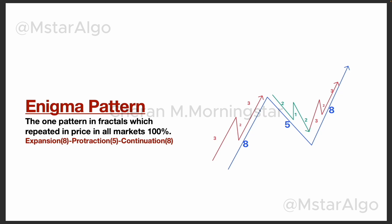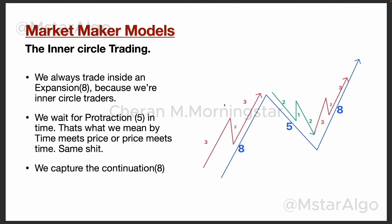We call these moves expansion, protraction, and continuation. You have a bullish book created here and you're waiting for some kind of a false move. In time, you see a stop run or an SMT divergence in a correlated pair, so you will get good signals in this area to capture this move.